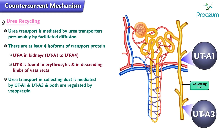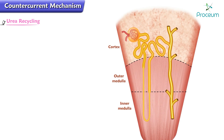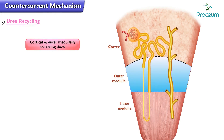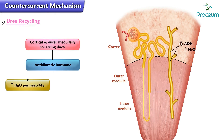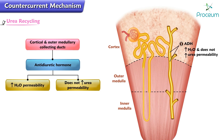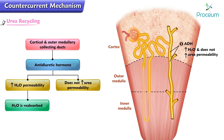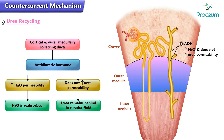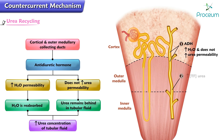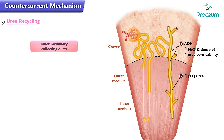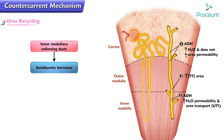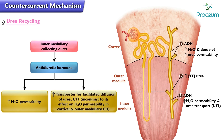Both urea transporter alpha-1 and alpha-3 are regulated by vasopressin. As shown in the schematic, in the cortical and outer medullary collecting ducts, ADH increases water permeability but does not increase urea permeability. As a result, water is reabsorbed from the cortical and outer medullary collecting ducts but urea remains behind in the tubular fluid. This differential effect of ADH on water and urea permeability causes the urea concentration of the tubular fluid to rise. In the inner medullary collecting ducts, ADH increases water permeability and also increases the transporter for facilitated diffusion of urea — urea transporter 1.